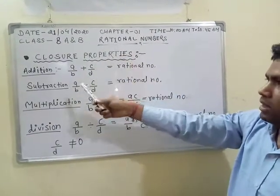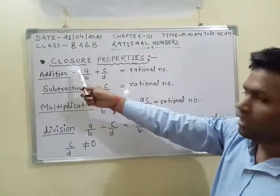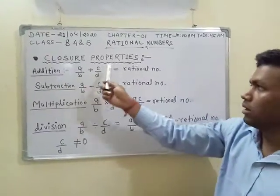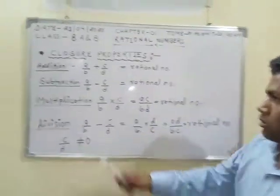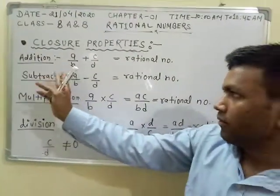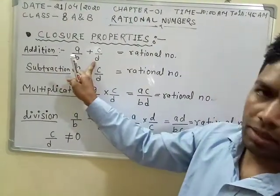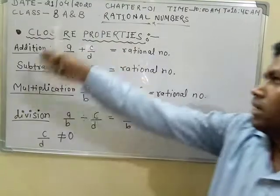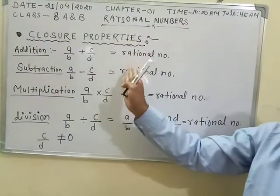Today we have to discuss closure properties. In closure properties, we have to check when two rational numbers are added, the result will be a rational number. Then it is applicable for closure property.